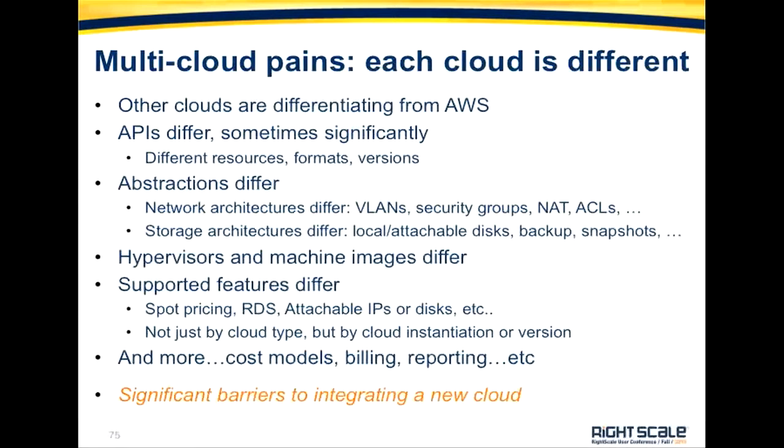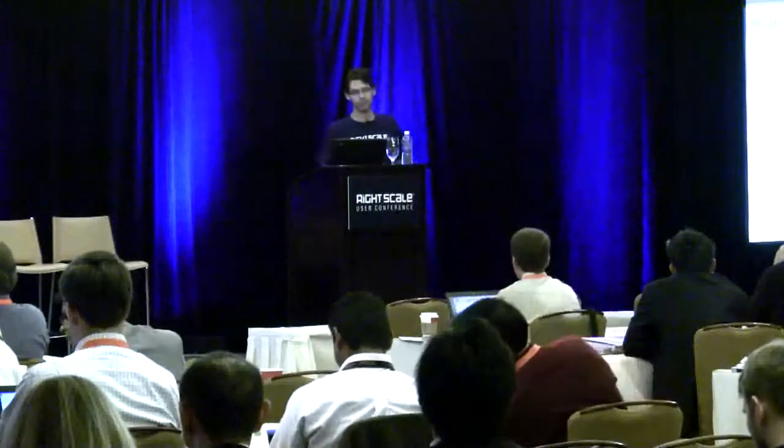Just take a look at network architectures: some clouds use VLANs, some use security groups, some have port forwarding, firewalls, or load balancers — quite different. The same is true for storage architectures: some let you specify which disk to attach, some are detachable, and backup approaches vary — snapshots may or may not be supported. Even hypervisors and supported features differ a lot. Some features don't even make sense across clouds; for example, Amazon's spot pricing doesn't make sense in a private cloud you already own. So there's quite an array of significant differences.